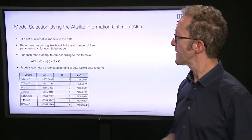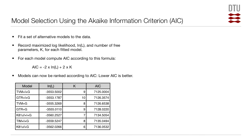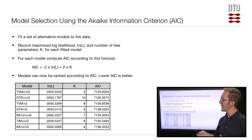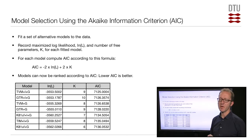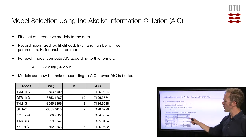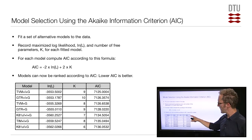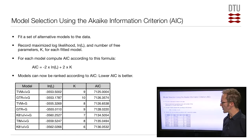If you want to do model selection using the Akaike Information Criterion, you start out by fitting a set of alternative models to the data. The models don't have to be nested, and you can have as many as you like. For each model you record the maximized log-likelihood and the number of free parameters K. You then compute AIC using the simple formula — minus 2 times the log-likelihood plus 2 times K. This gives you an AIC value, and you sort models by AIC with the smallest being the best. In the example shown in the table, the model TVM+I+G is the best of the investigated models.